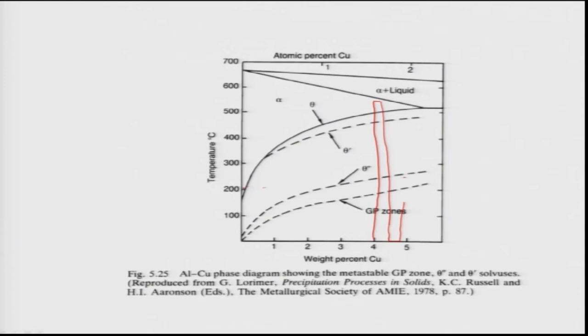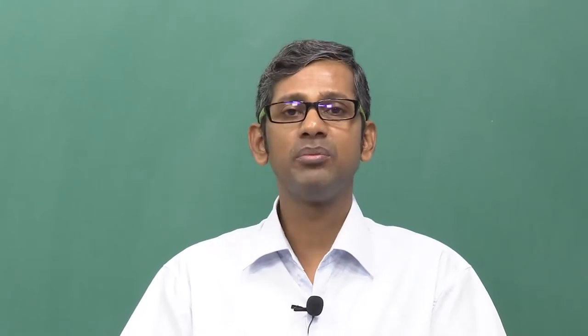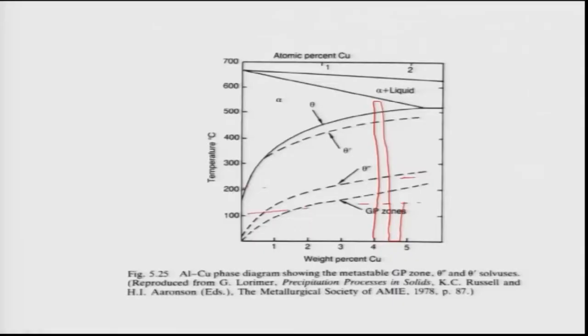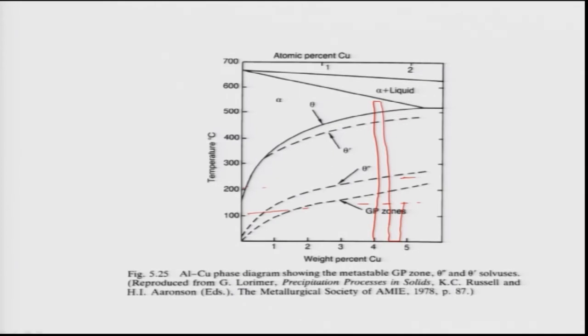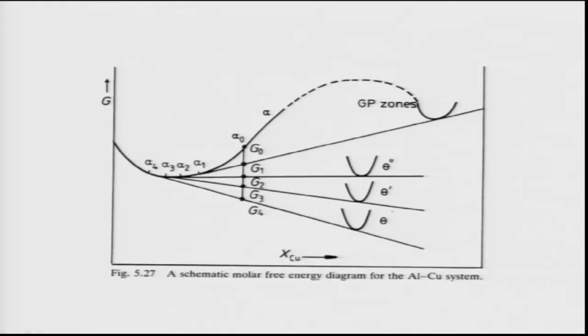More precisely, temperatures around 130 to 190 degrees Celsius are used. The quenched alloys are held at these temperatures for different durations, causing precipitates to form. Precipitation happens in stages: first GP zones form, followed by theta double prime, then theta prime, and finally the equilibrium precipitate theta with composition CuAl₂.